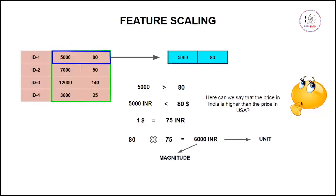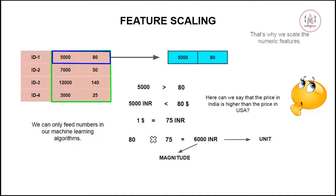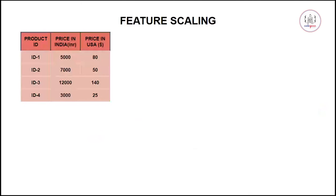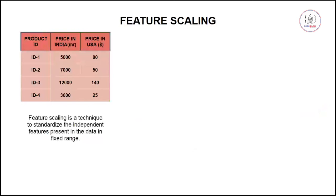So here we have both magnitude and unit of measurement, but in machine learning models we cannot fit units — we can only fit numbers into our algorithms. That's why we came up with scaling our features so they are in some fixed range and can be compared easily. Feature scaling is a technique to standardize the independent features present in the data in a fixed range.